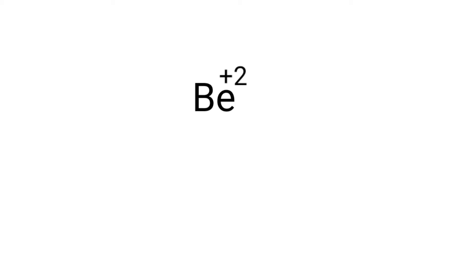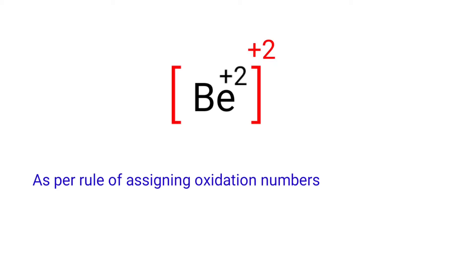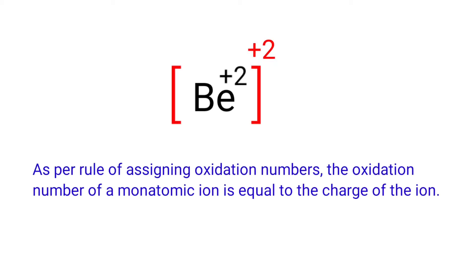Beryllium ion is a monatomic ion with oxidation number plus 2. As per the rule of oxidation numbers, the oxidation number of a monatomic ion is equal to the charge of the ion.